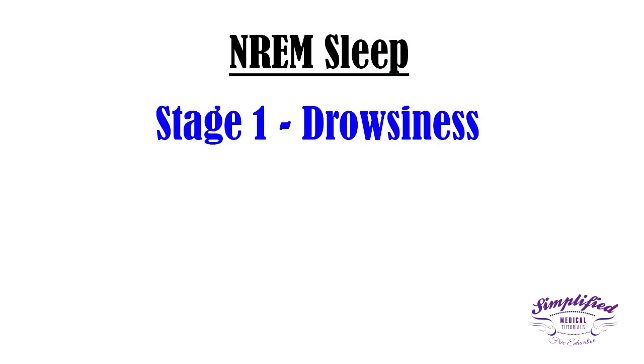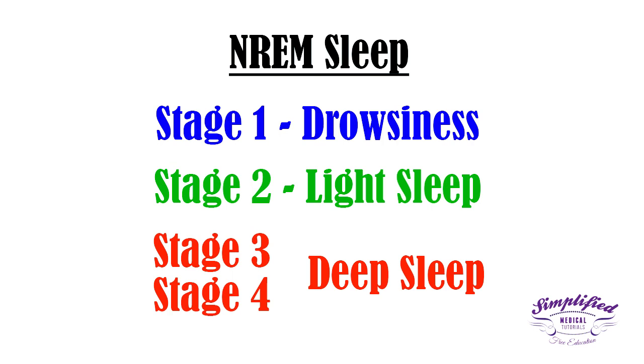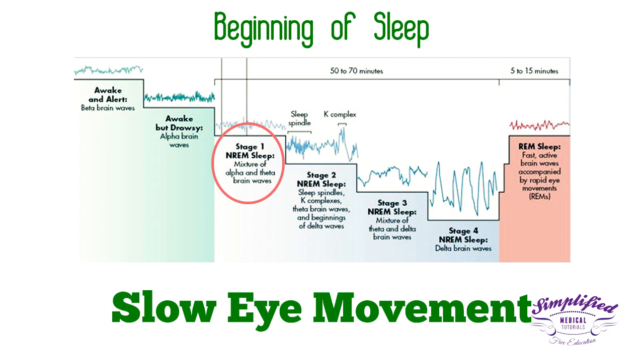NREM sleep is divided into four stages. Stage 1 is characterized by drowsiness, stage 2 by light sleep, and stages 3 and 4 by deep sleep. Stage 1 occurs mostly at the beginning of sleep with slow eye movements.